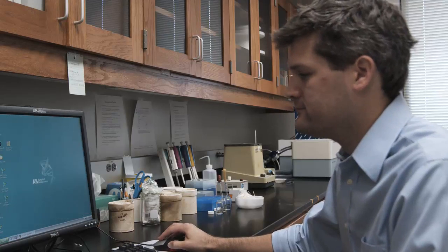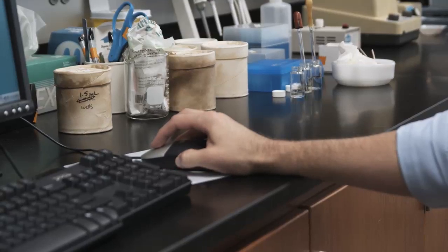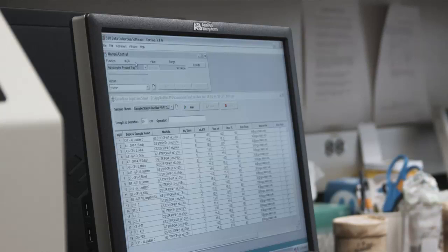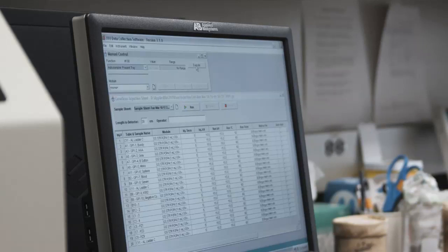The forensic scientist mainly stays in the laboratory and conducts their work from the laboratory. The crime scene investigator, on the other hand, is mainly in charge of collecting evidence at the crime scene.